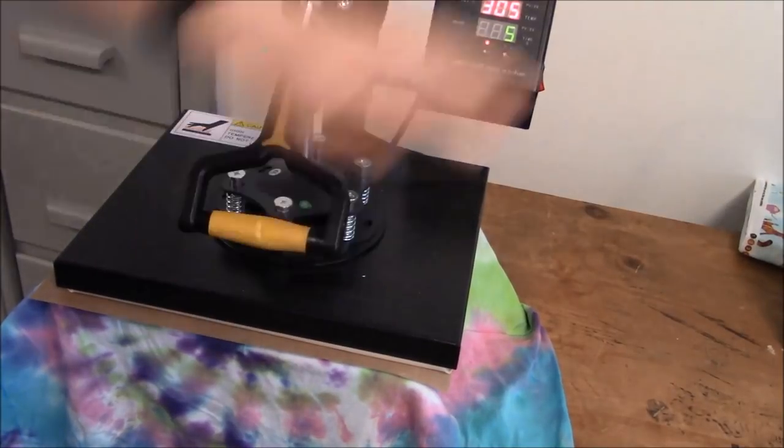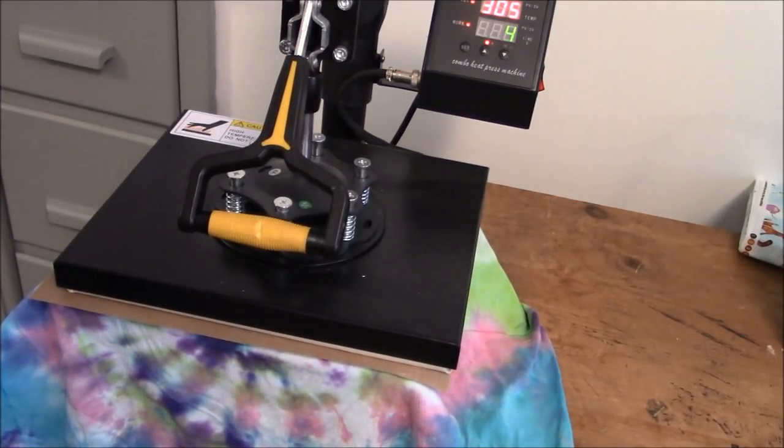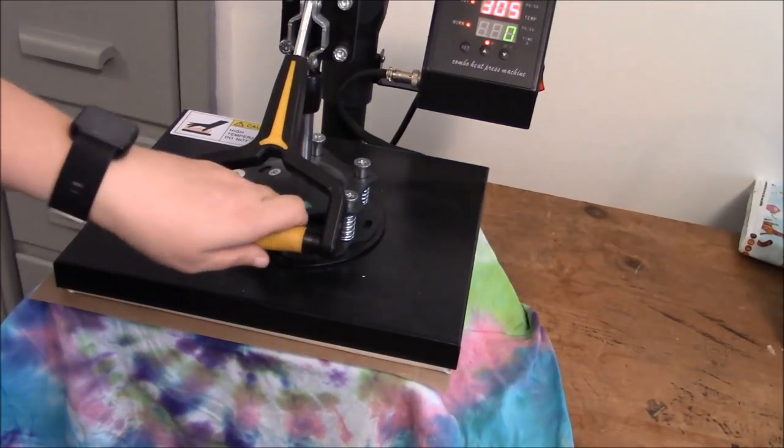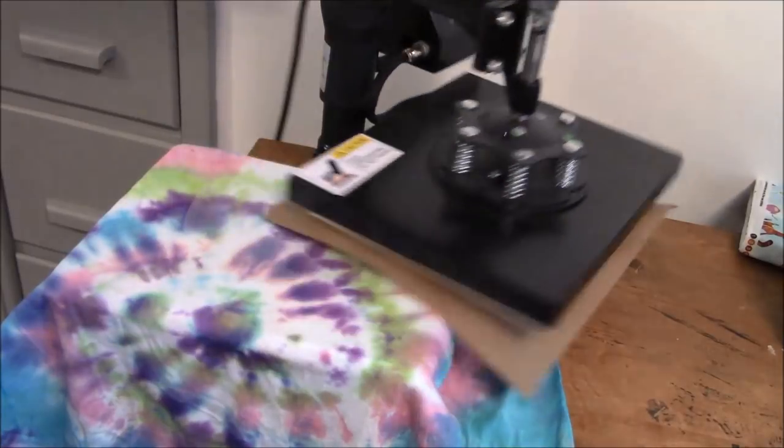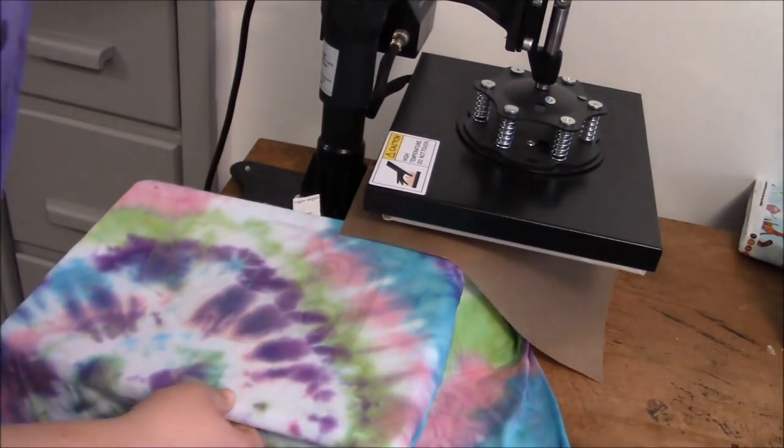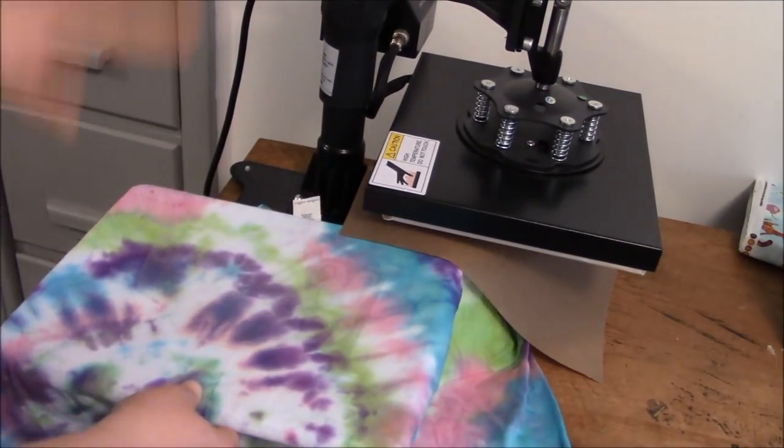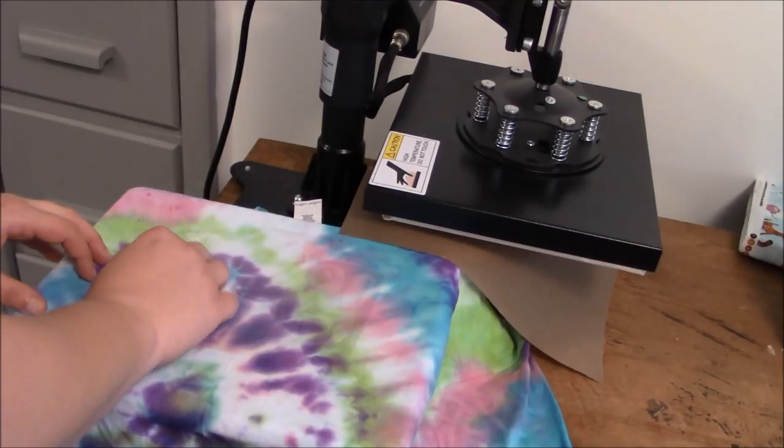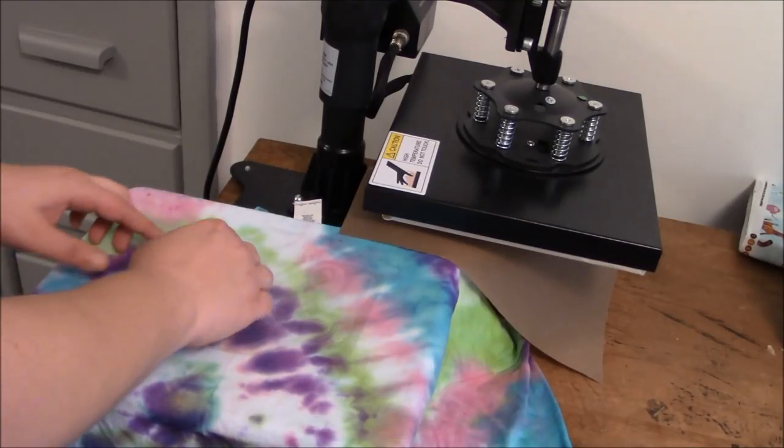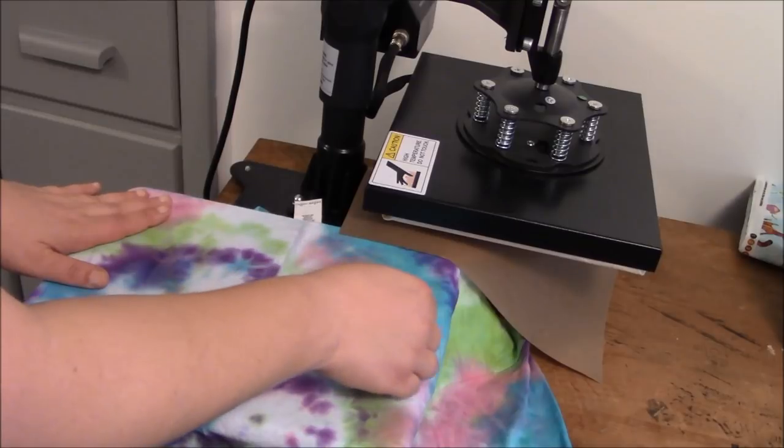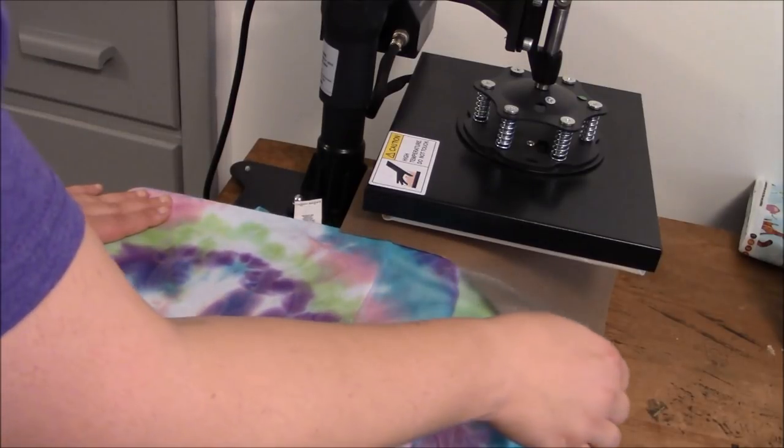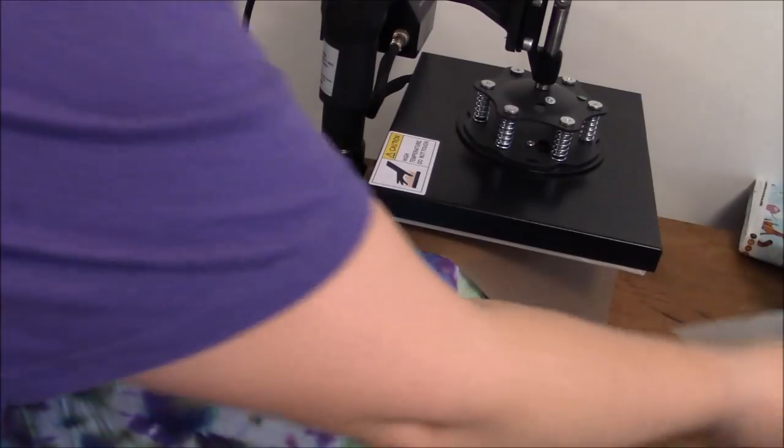We're going to push this down and hit the down arrow. It's going to go, like I said, for five seconds. So it's a real quick press. I'm going to go ahead and lift that up. And you're going to press the down arrow to turn off the timer because I love to leave that on. And then all you're going to do is peel your transfer sheet off. And you do want to do this while it's relatively hot. And you're going to let this cool down.